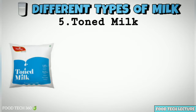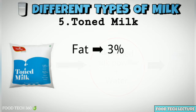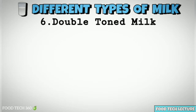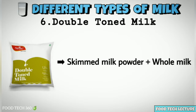Fifth, toned milk. Toned milk is also called single toned milk, which is obtained by adding skimmed milk powder and water to whole milk. It contains about 3% fat, and toned milk restricts the body from absorbing cholesterol from the milk to a minimum. One glass of toned milk provides around 120 calories. Sixth, double toned milk. Double toned milk is obtained by adding skimmed milk powder to whole milk and has about 1.5% fat content.